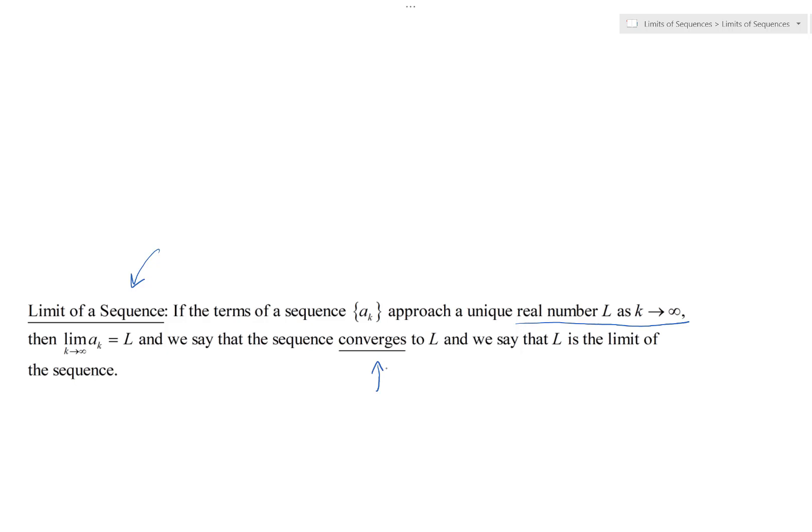Basically it's just like any other limit, except the only difference is that instead of the input k going to infinity across all real numbers, k is reserved to be a natural number — it has to be a natural number.